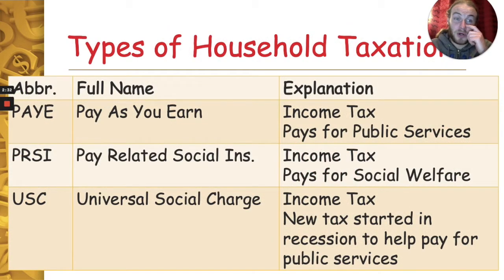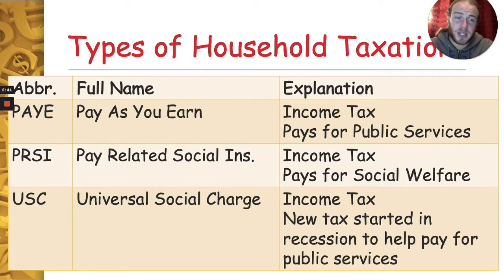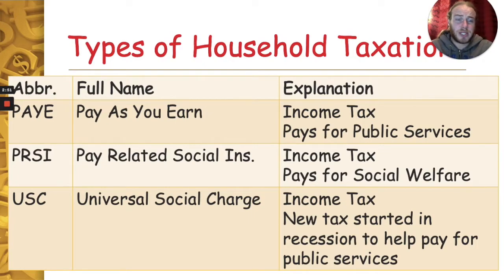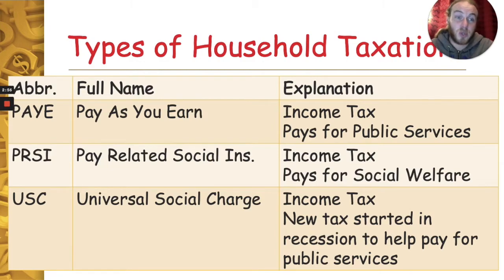Now I'm going to do a whistle-stop tour through different examples of household taxes. The tree on the screen there — PAYE, PRSI, and USC — are examples of income tax. PAYE, Pay As You Earn, is used to pay for public services, for example education, healthcare, policing, etc. PRSI, Pay Related Social Insurance, is another form of income tax that is specifically ring-fenced for social welfare payments or social protection payments.